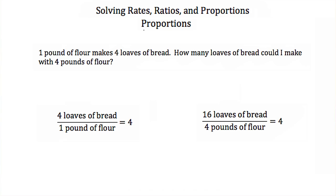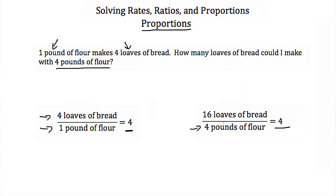Now proportions can be used in a lot of things, and the most common example is in baking or cooking with recipes. So if I have a recipe to make 4 loaves of bread, and I know that 4 loaves of bread are made with 1 pound of flour, and I had 4 pounds of flour at home and wanted to use it all, how many loaves of bread would I make? To make sure the loaves come out right, I have to keep my ingredients in the same proportion. My ratio of 4 loaves of bread to 1 pound of flour reduces to 4, so I have to make 16 loaves of bread to use up all the flour.